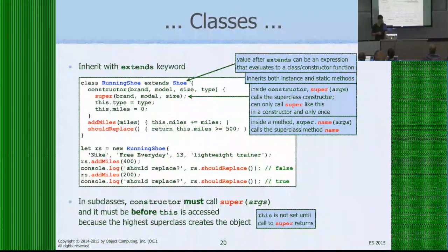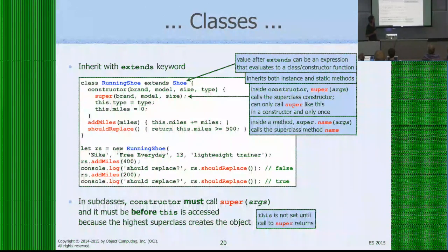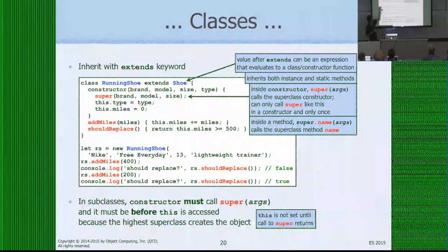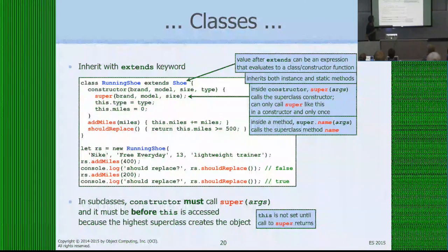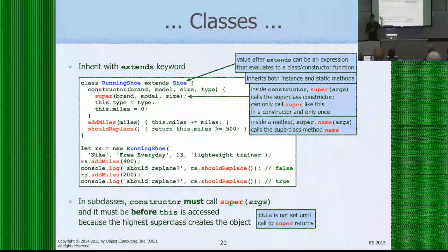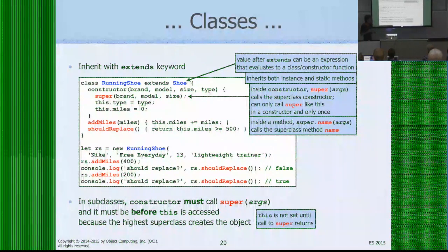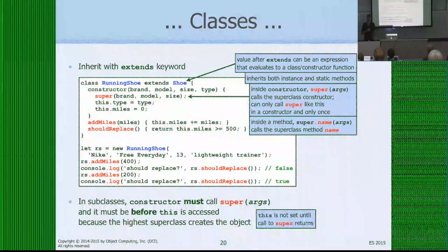Here's an example of a class that inherits from another one. I have a `RunningShoe` class that extends `Shoe` — and notably, the thing after `extends` can be any expression, not just the name of a constructor. I use `super` to pass the first three parameters to the superclass constructor, then store `type` and initialize miles to zero. I have a method to add miles and one to check whether it's time to replace the shoe (after about 500 miles). Inside a constructor for a class that extends another, you must call `super` before you access `this` — the superclass constructor creates the object.